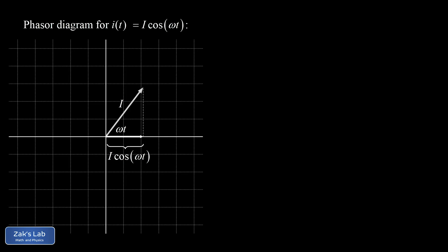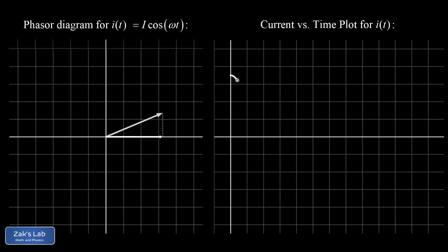So now we can visualize this current phasor in motion. Starting at t equals zero, this vector rotates with angular velocity omega. And the horizontal projection gives us the real current values as a function of time, where we're using the usual convention that a rightward pointing component is positive and leftward is negative.